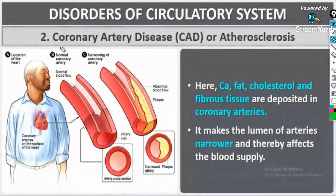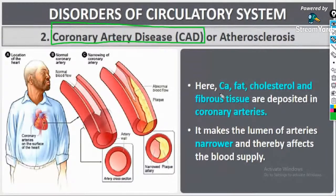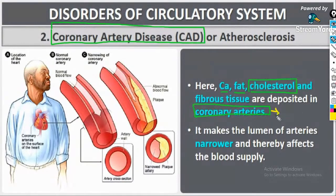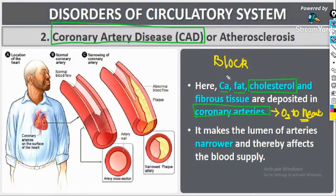Next is the coronary artery disease or atherosclerosis. In this condition, calcium, fat, and mainly cholesterol are deposited in the coronary artery. The coronary artery supplies oxygenated blood to the heart — if it fails, no oxygenated blood reaches the heart. In common language, people call this a 'block,' but the correct medical term is coronary artery disease or atherosclerosis.